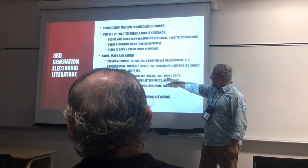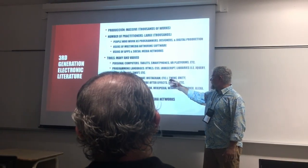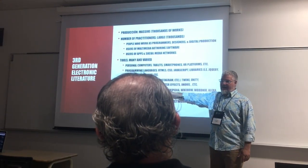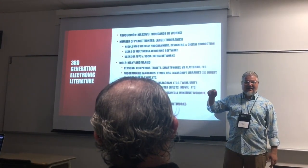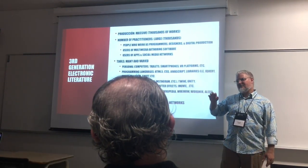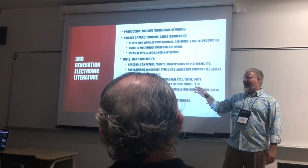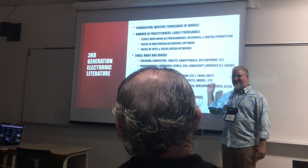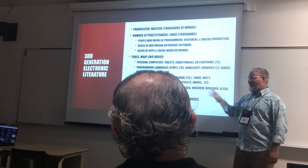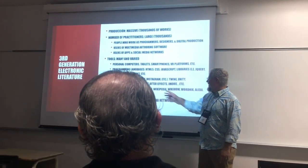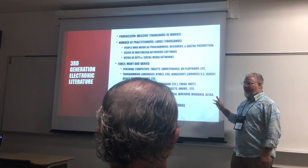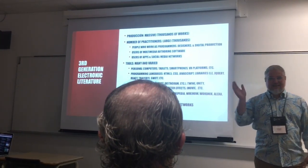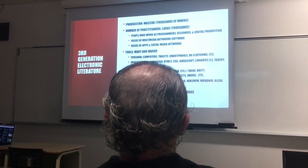The tools are many and varied. We have platforms like Twine and Unity, Cheap Bots Done Quick — the last count I got, there are over 7,000 bots active right now using Cheap Bots Done Quick, publishing, generating, on Twitter. And of course we have a lot of API services which really start emerging around mid-2005.